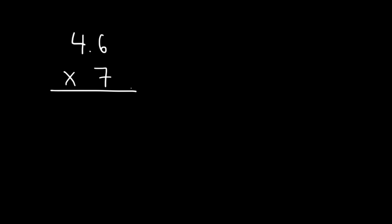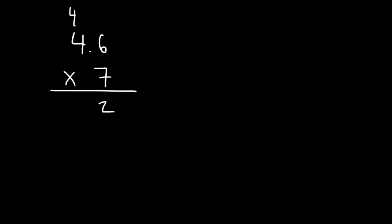First, we need to multiply 6 times 7. 6 times 7 is 42. So we put the 2 and carry over the 4. Next, let's multiply 4 times 7. 4 times 7 is 28, and we need to add the 4 on top. 28 plus 4, that's 32.